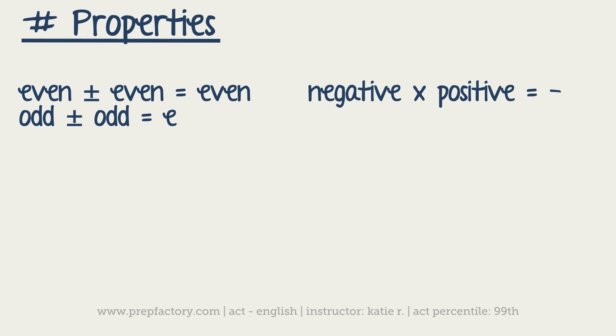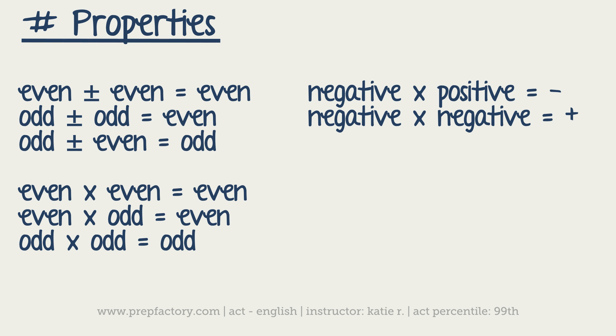Let's go ahead and look at number properties for a second. Basically, number properties is knowing when you get an even, a positive, a negative, an odd out of a combination of numbers. So this is pretty simple, but basically it's all the pairings of odds and evens together.